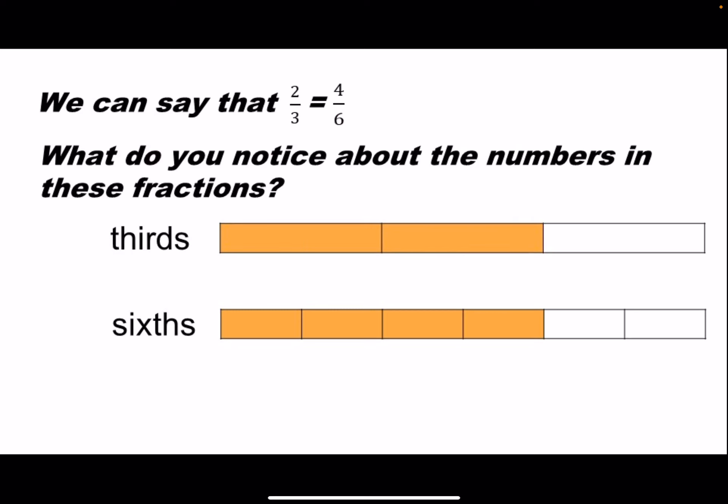We can say that two-thirds equals four-sixths. What do you notice about the numbers in these fractions? Do you notice that the top numbers are two and four, and two is half of four? The bottom numbers are three and six, and three is half of six.